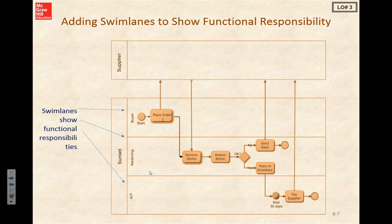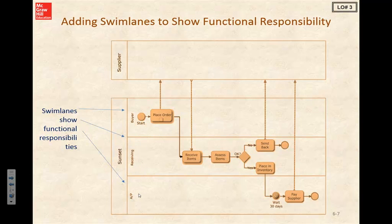Actually, it looks like we've got two separate pools going on. The supplier is a pool all their own, and Sunset is a pool. Within Sunset's pool, we separate into swim lanes. Our swim lanes here in Sunset's pool are buyer, receiving, and accounts payable.